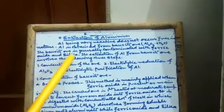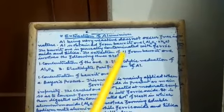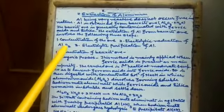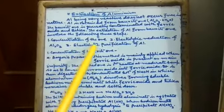The bauxite ore is generally contaminated with ferric oxide and silica. The extraction of aluminum from bauxite ore involves the following three steps. First, concentration of the ore. Second, electrolytic reduction of alumina, that is Al2O3. Third, electrolytic purification of aluminum.